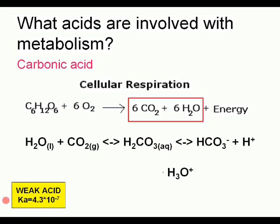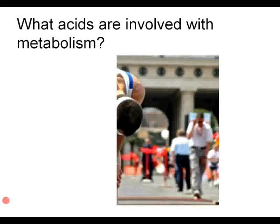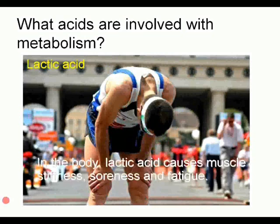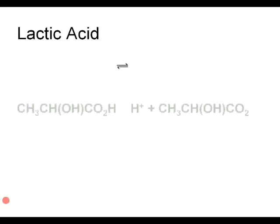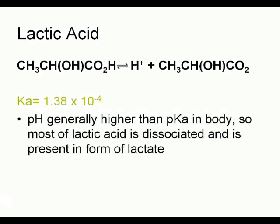A better chemical equation would be where hydronium is formed — a high concentration of hydronium produces a lower pH. Cellular respiration can also result in the production of lactic acid. The runner shown is feeling fatigue and sore muscles because of the buildup of lactic acid. Lactic acid is a weak acid with an equilibrium constant of 1.38 × 10⁻⁴. Because pH is generally higher than pKa in the body, most of lactic acid is dissociated and is present in the form of lactate.